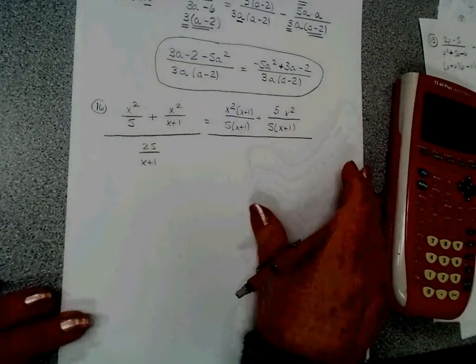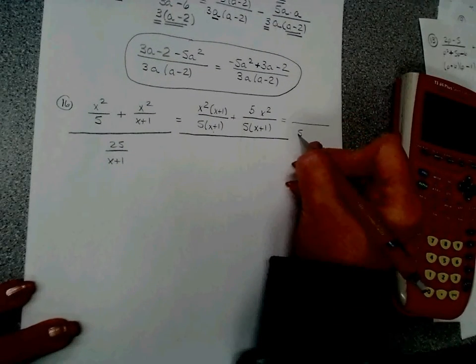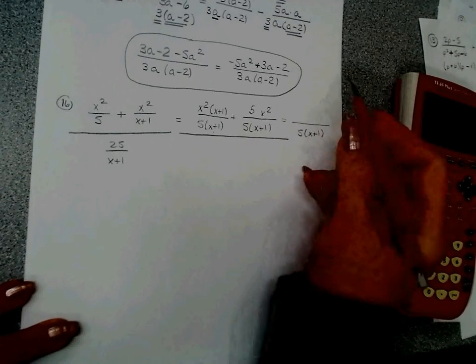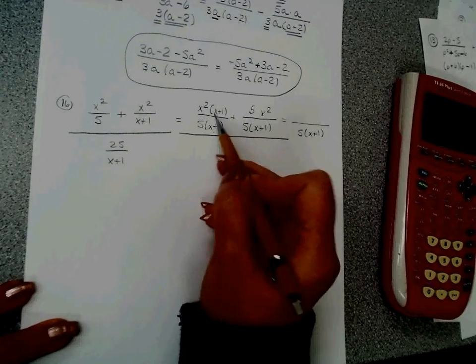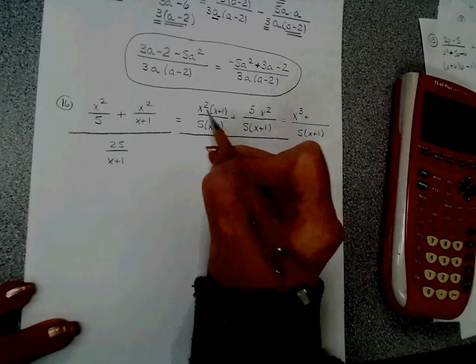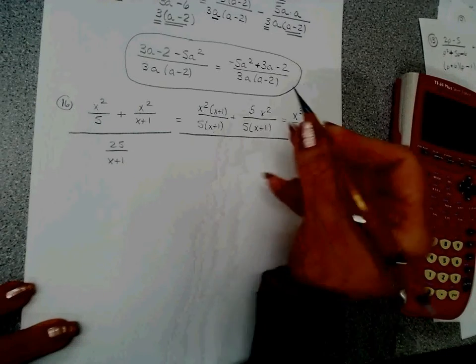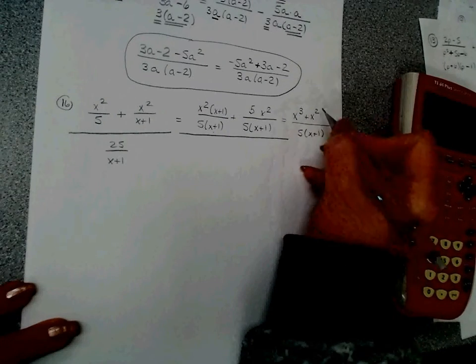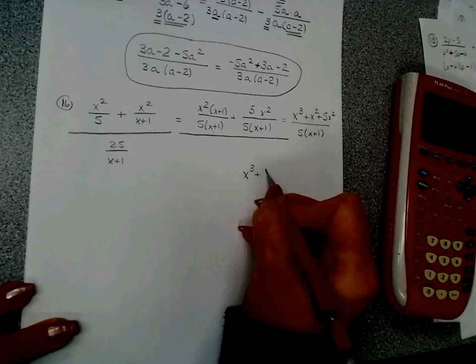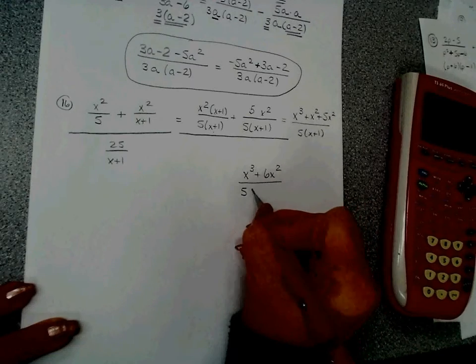Now, let's simplify out the top. They have the same denominator, so I can bring the numerator together. x squared times x is x cubed plus x squared times 1 is 1x squared plus 5 more x squared, so my numerator is going to be x cubed plus 6x squared over 5 times x plus 1.